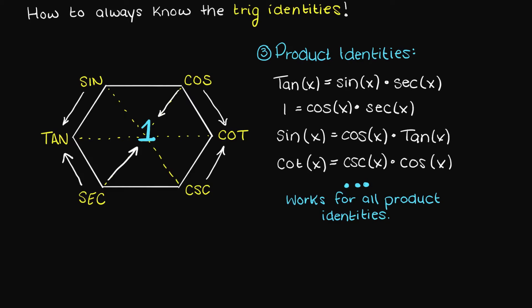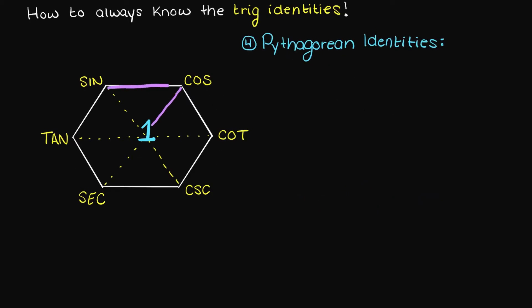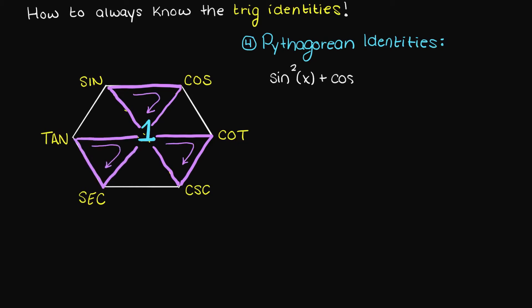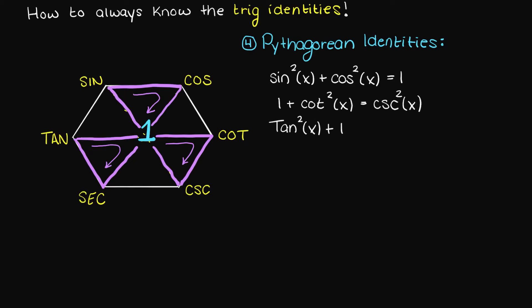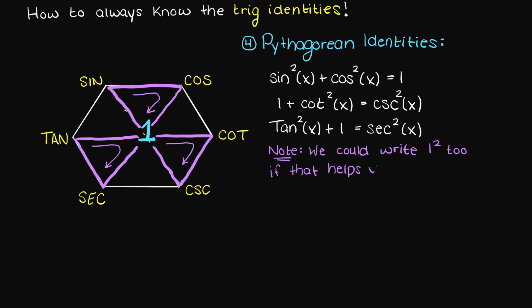You can also use this hexagon to remember the Pythagorean identities. In these three purple triangles, if you move clockwise or counterclockwise you will always have the Pythagorean identities — you just need to square each of those terms. An easy way to remember this is that you're making two turns, so you square each term. As you can see, all the Pythagorean identities are found correctly using this hexagon.